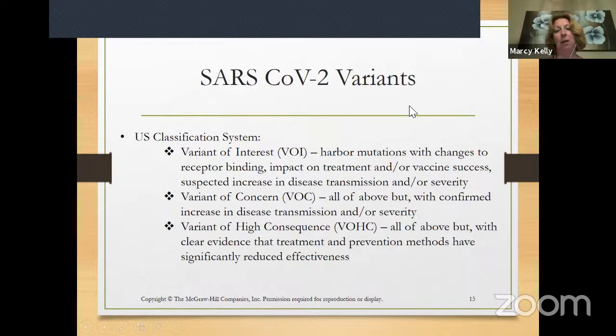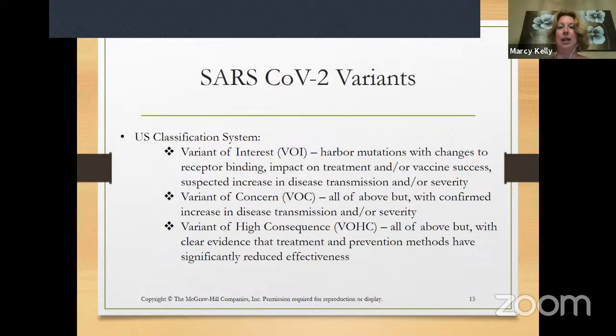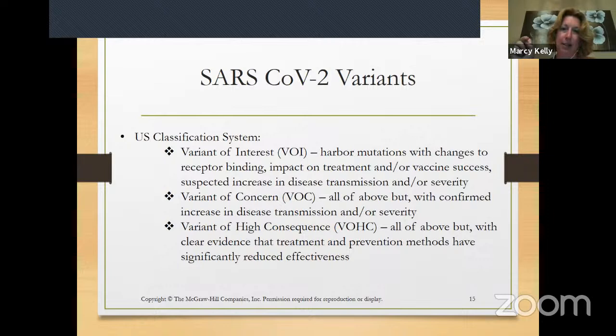Let me tell you a little bit more about how the United States has decided to characterize variants. The CDC has come up with three levels of concern. A variant of interest is a variant of SARS-CoV-2 that has evolved with mutations that somehow impact receptor binding — the interaction between the spike protein and ACE2 — with a small potential impact on treatment and vaccine success, and may increase disease transmission or severity, but not to the level of a variant of concern.